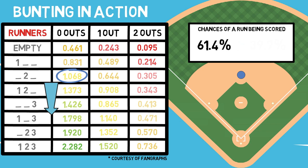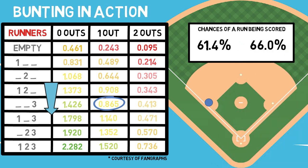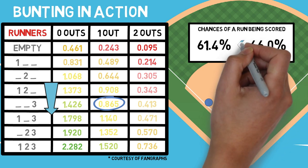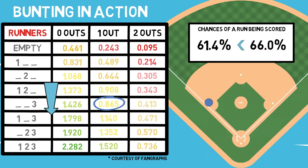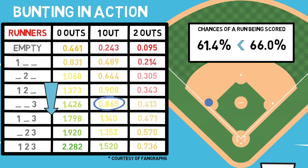Back to our example. What if in this situation we decided to bunt our runner from second to third, giving ourselves up in the process? Like before, we will see a drop in our run expectancy — the more outs, the less likely we are to score in general. However, when we look at our chances of scoring a run, we have actually increased that percentage by 5%. That's important, and one of the reasons the bunt is still used in today's game in very specific situations. If you are in a close game, that one run may mean more than if you were starting out a game on a clean slate.